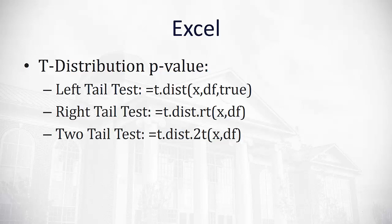If you do equals t.dist, that's going to be a left tail test. We'll put x, the degrees of freedom, and then we always have to type in true after the second argument. For the right tail and two tail test, we only need two arguments. We'll say equals t.dist.rt for right tail, and we just have to type in the x value and the degrees of freedom. For two tail test, we just put dot 2t at the end of the command.